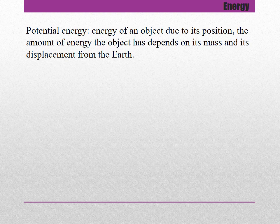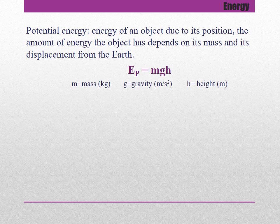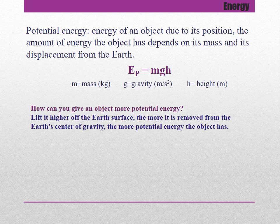Potential energy is the energy of an object due to its position. The amount of energy the object has depends on its mass and its displacement from the earth. Potential energy is equal to mass times gravity multiplied by height. Lift it higher off the earth's surface — the more it is removed from the earth's center of gravity, the more potential energy the object has.